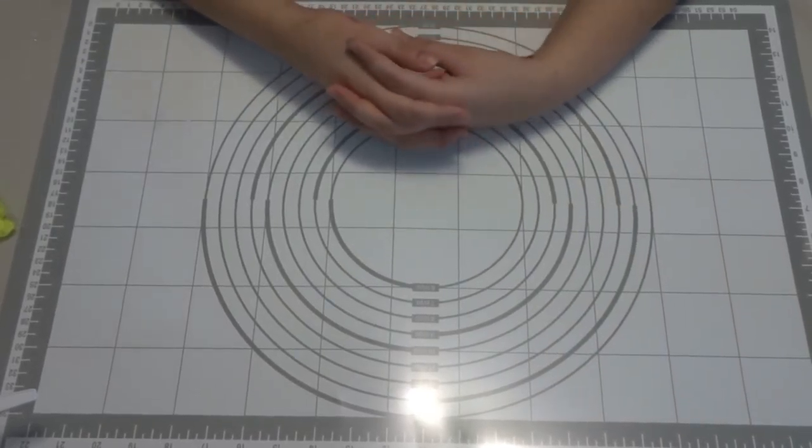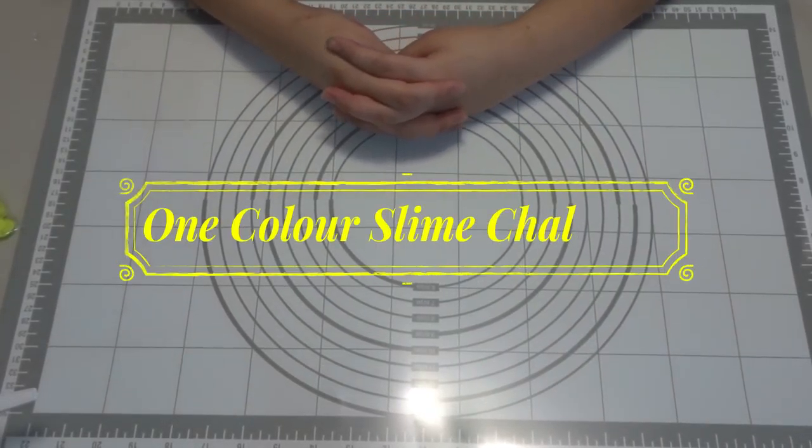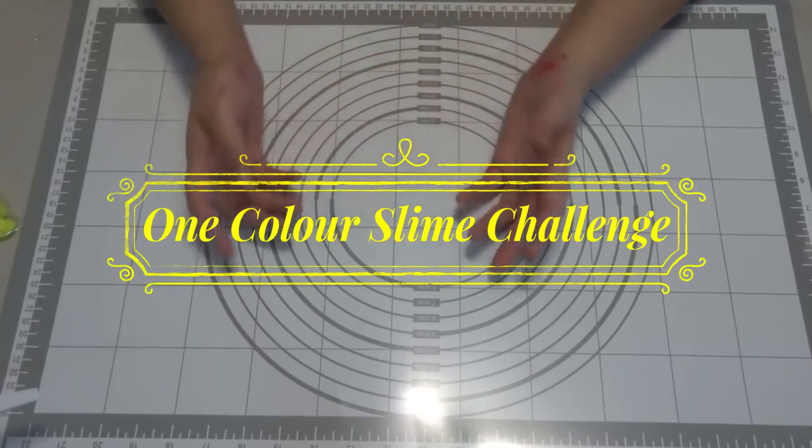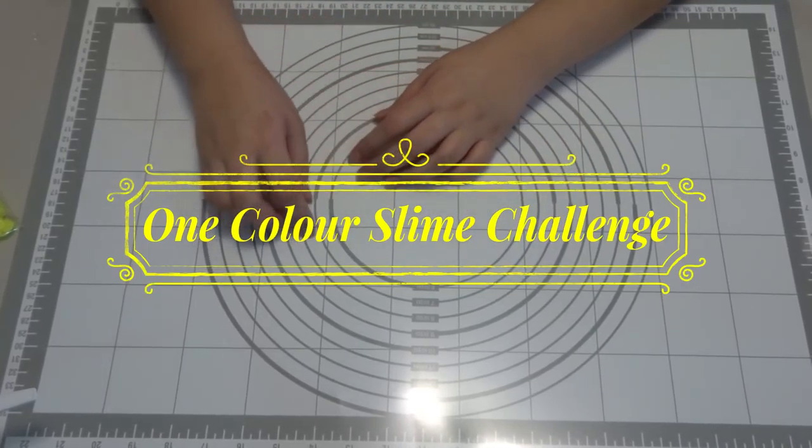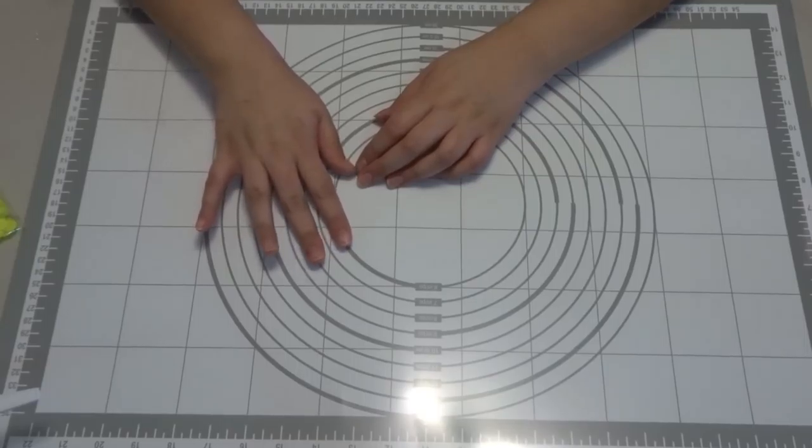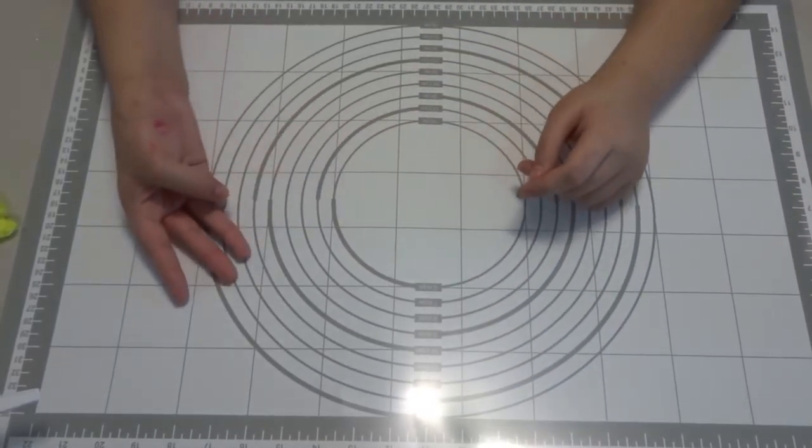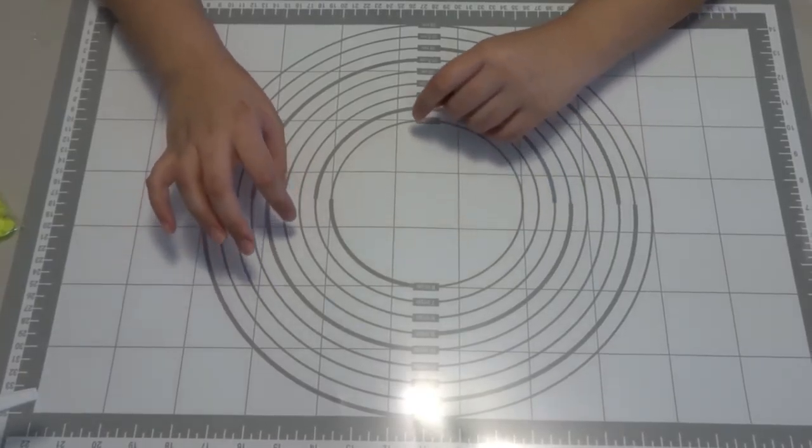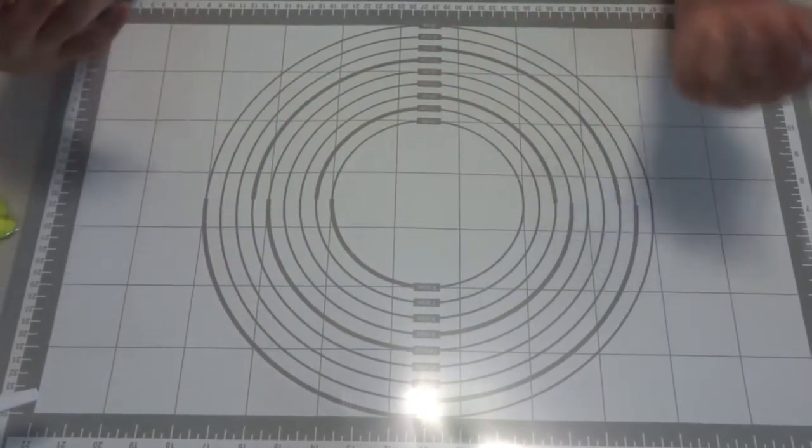Hey guys, One and a Minion here, and today I'm going to be doing the One Color Slime Ingredient Challenge. I've done a couple of these in the past. I think I did red and green and maybe blue and orange. So today I'm going to be doing yellow.